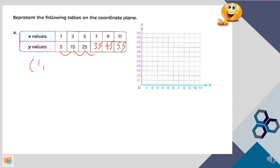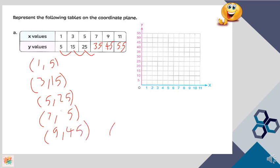The ordered pairs are: 1 and 5, then 3 and 15, then 5 and 25, then 7 and 35, then 9 and 45, and the last ordered pair is 11 and 55.